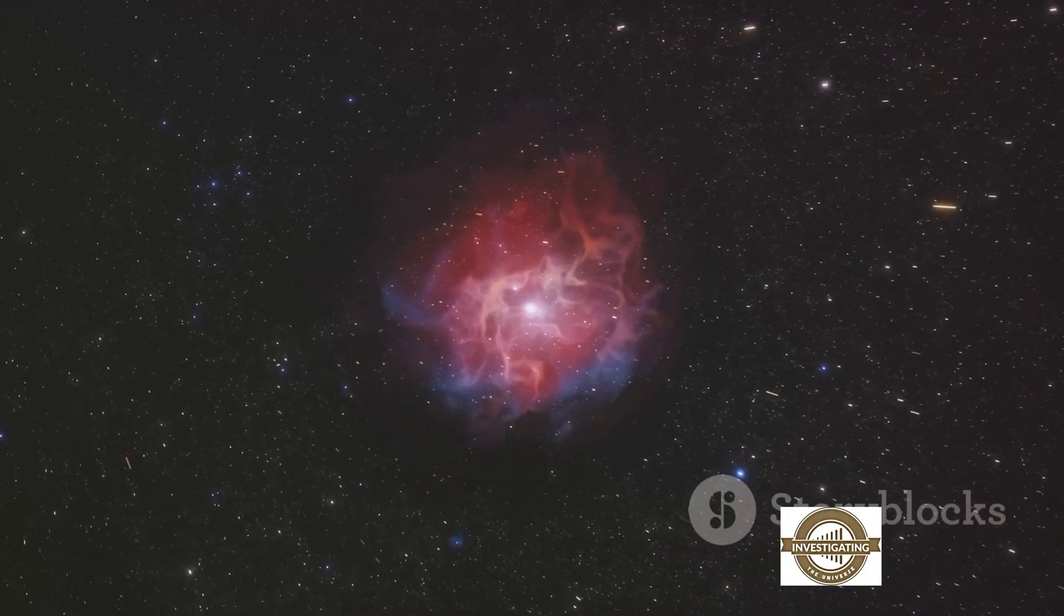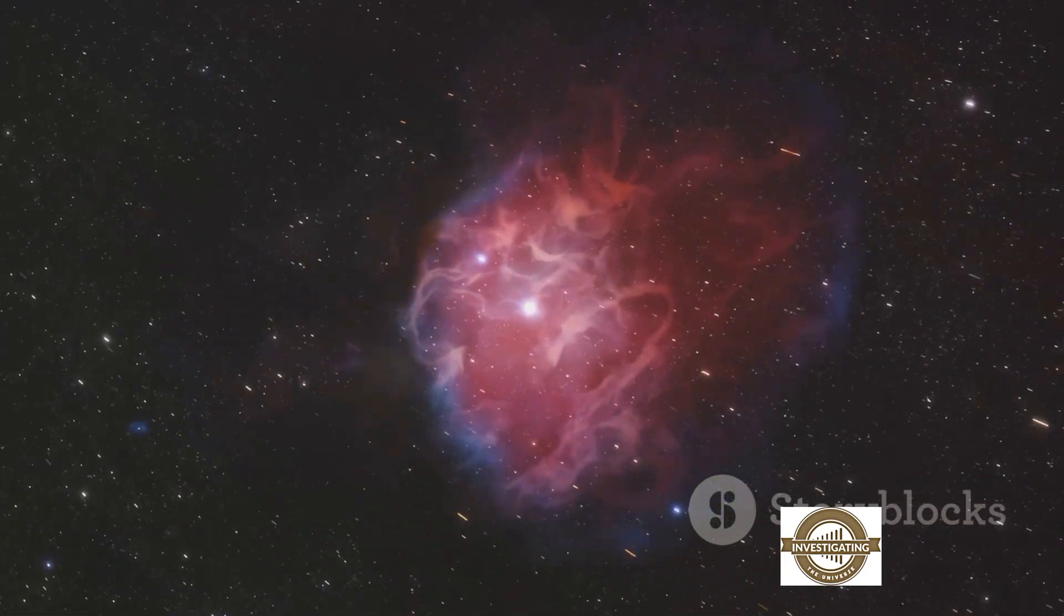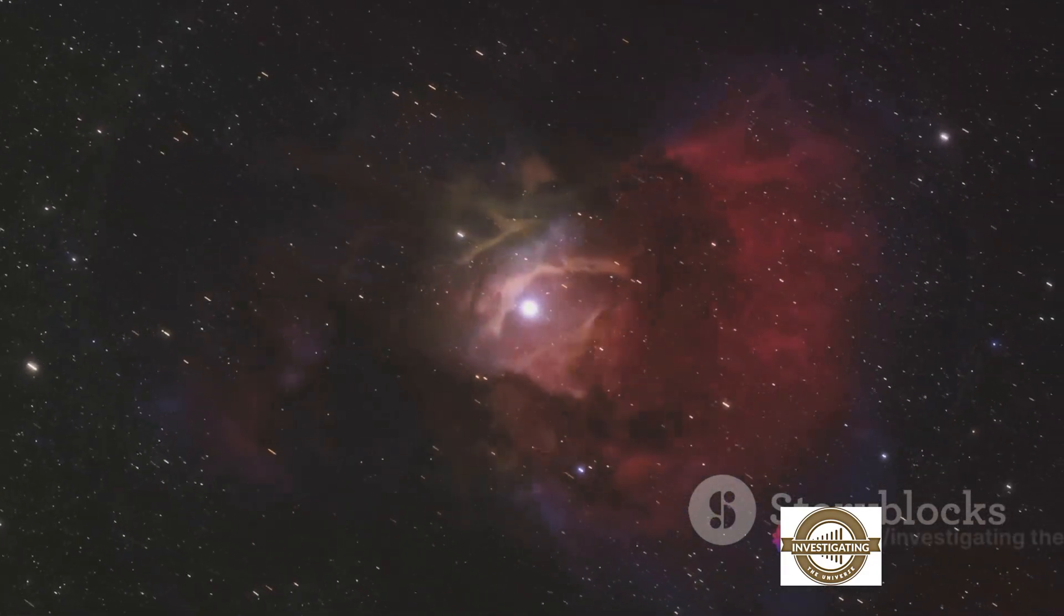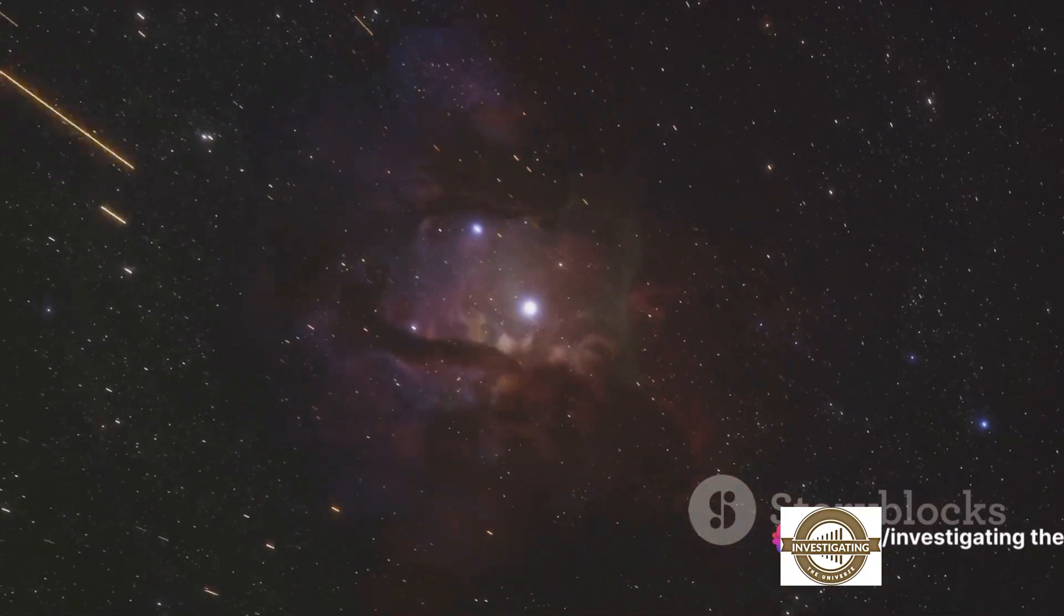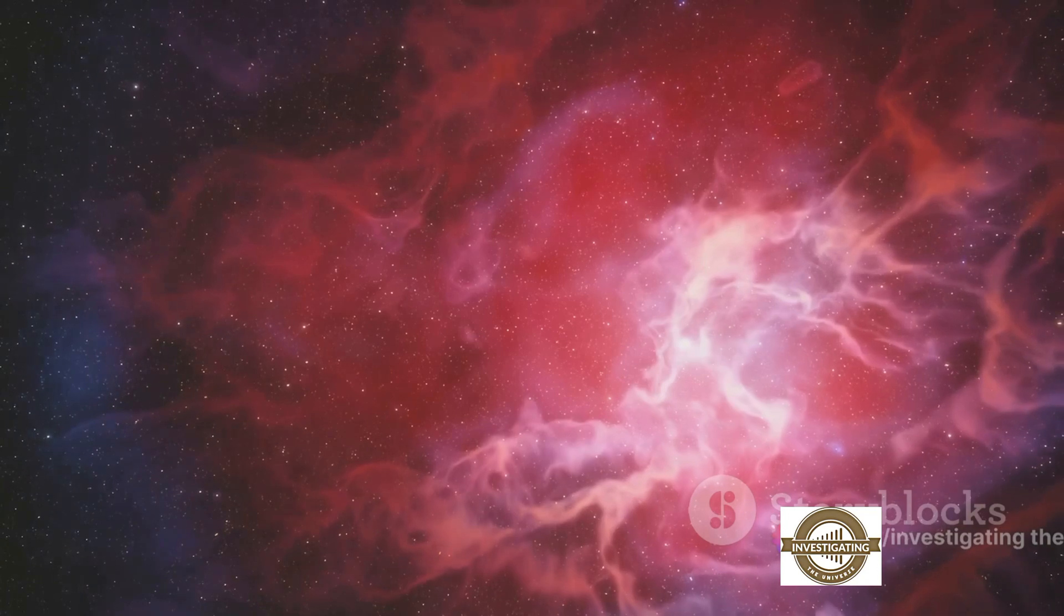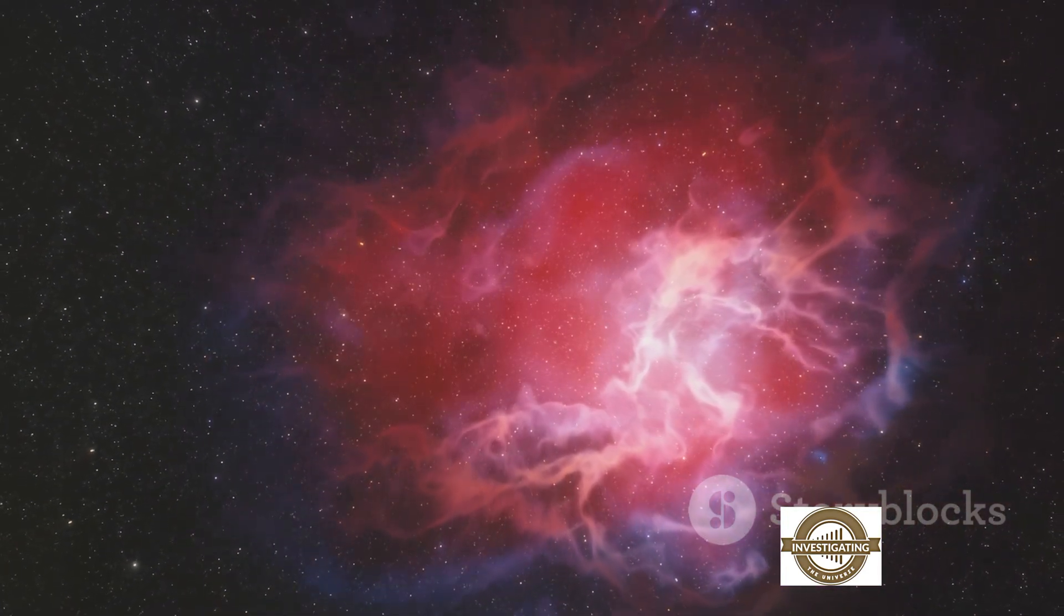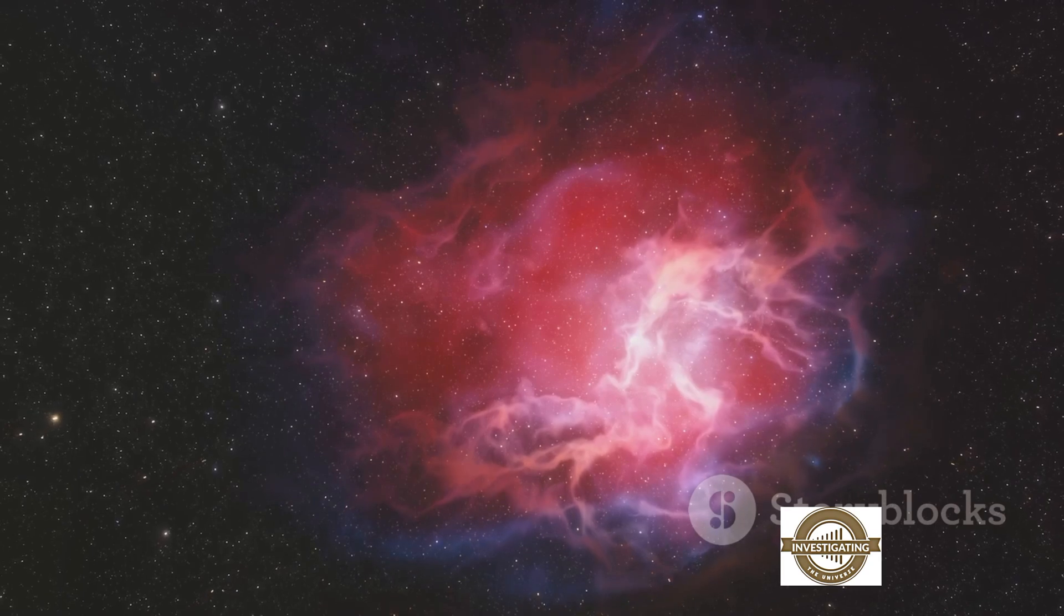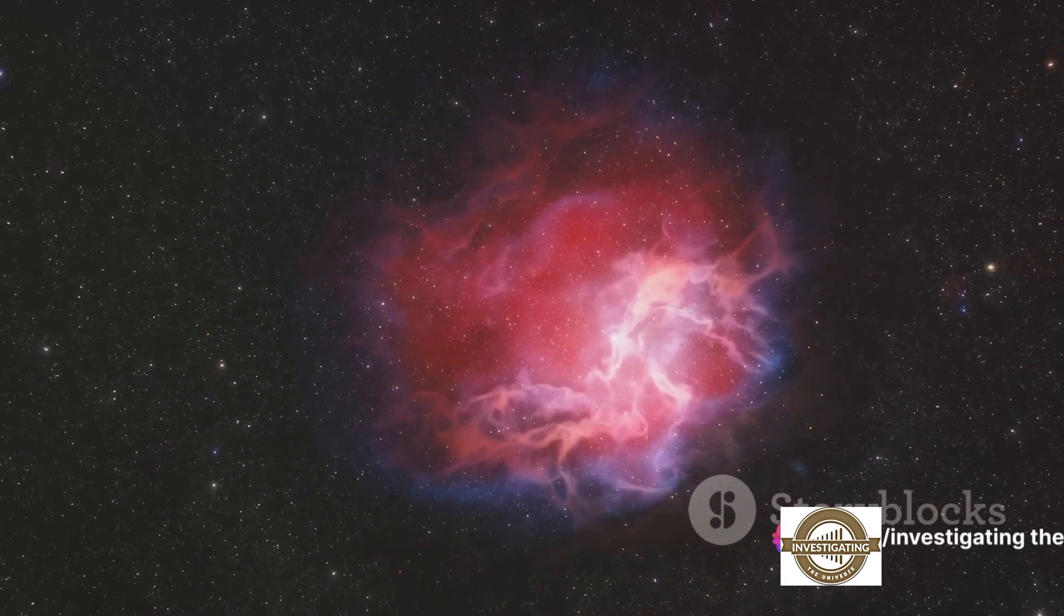But what's the buzz about Betelgeuse going supernova? Well, Betelgeuse is a red supergiant, a star that has reached the end of its lifespan and is on the verge of a spectacular explosion. It's located in the constellation Orion, about 700 light years away from us, and is significantly larger and brighter than our sun. This star has been closely watched by astronomers as they've predicted its supernova phase for a while now.